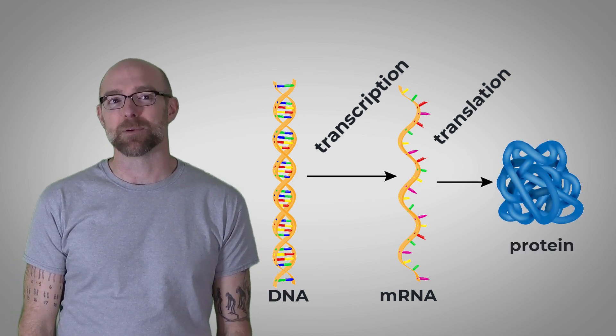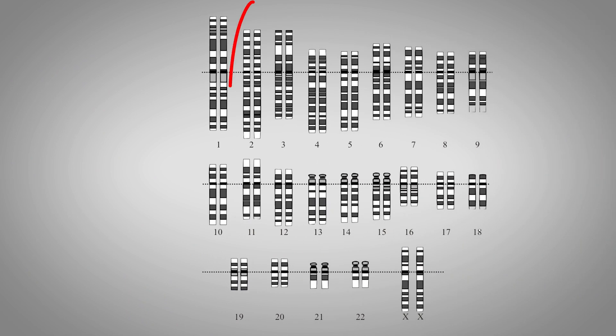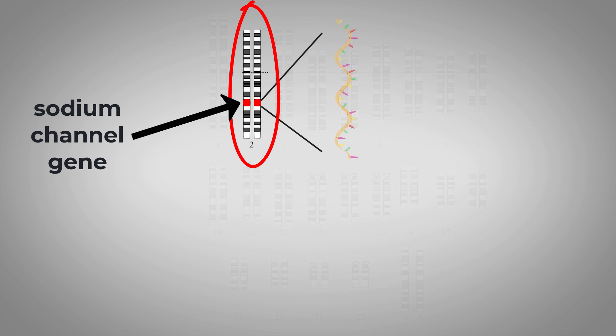Let's look at one example. On chromosome number two, you have your sodium channel gene. That gene gets transcribed, and the associated mRNA gets translated, and voila, you end up with your sodium channel protein.